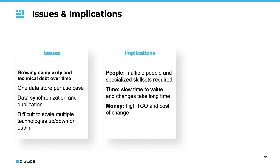These issues have significant implications. On the people front, the complexity necessitates multiple skill sets and a larger team, far from the ideal of simple training, high developer productivity, and efficient operations. In terms of time, these challenges slow down the delivery of value, prolong the time required for changes, and lead to a lot of overhead activities — a stark contrast to the desired state of fast development and rapid changes. Moreover, these issues result in high total cost of ownership and high cost of change.